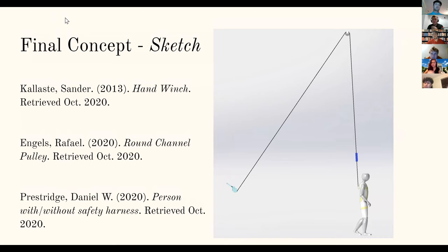So here we have a SOLIDWORKS render as a sketch of our final concept. It shows that the hand winch will be placed on a wall a few feet behind the patient. The room is 20 feet tall, so the wire supporting the patient will be stretched over a pulley to be adjusted with the winch.